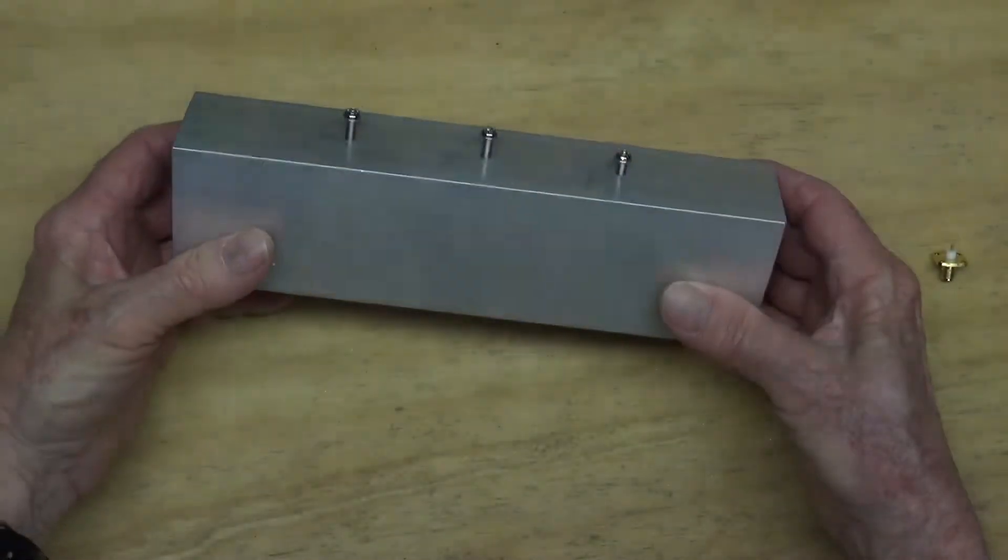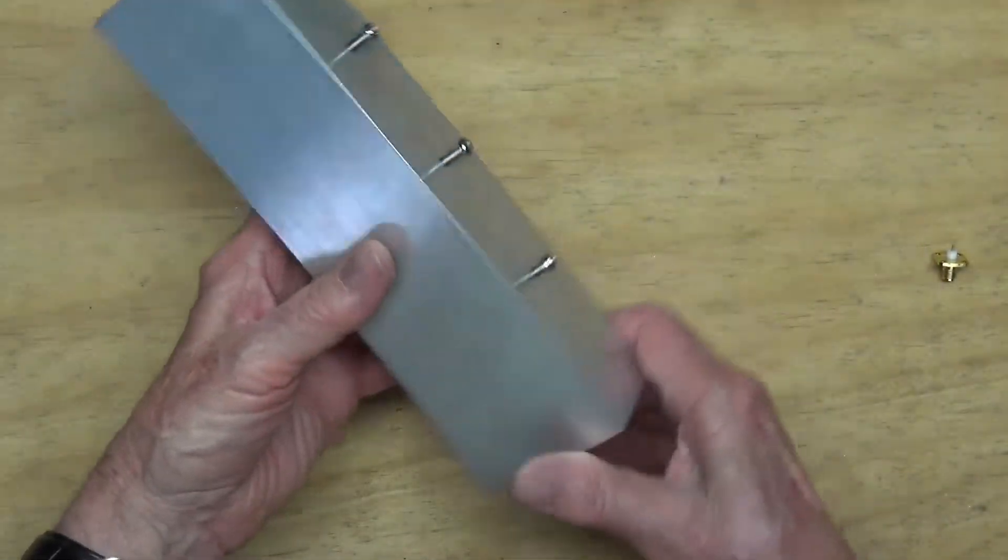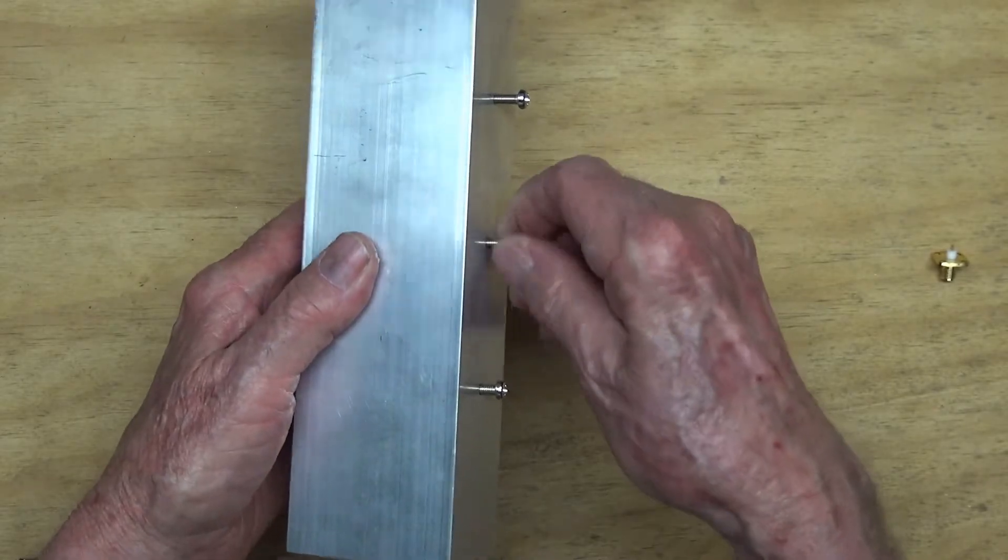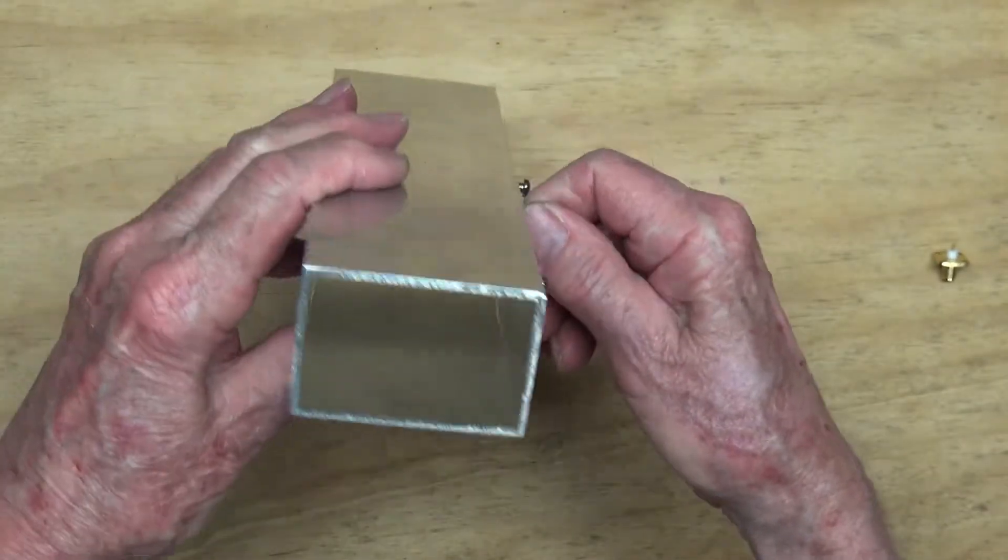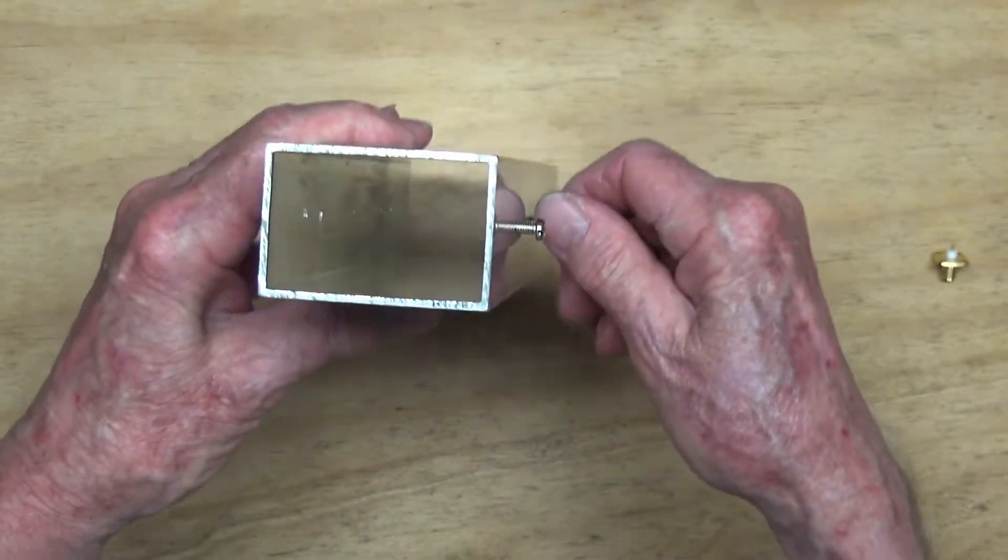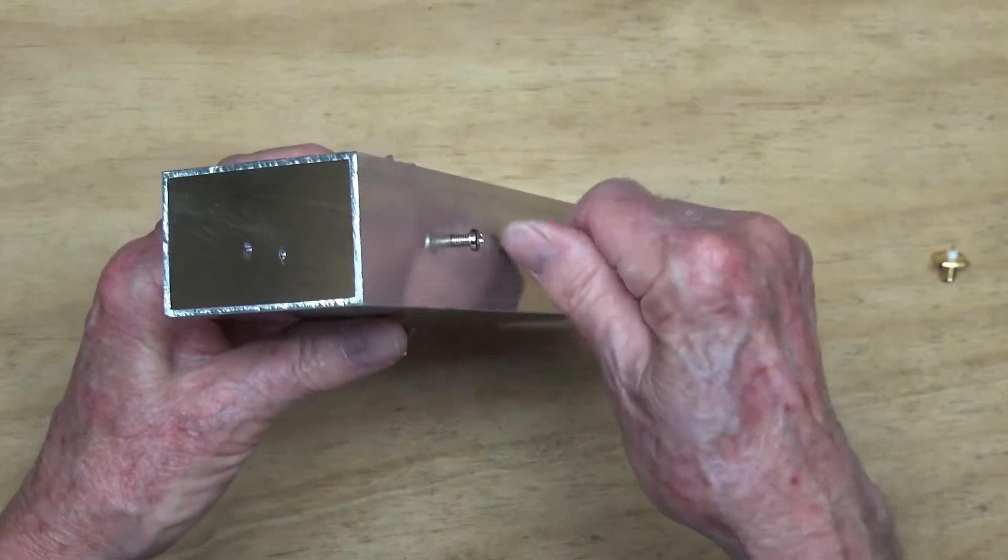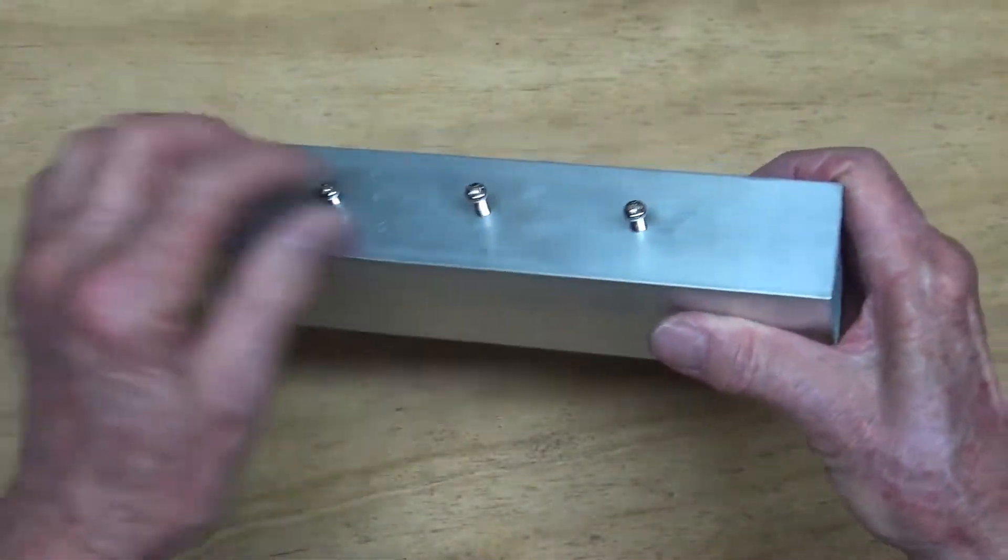I've cut the 4mm thread for the tuning screws here. This is fairly thin aluminium, so I only drilled a 3mm hole, and they're quite tight.